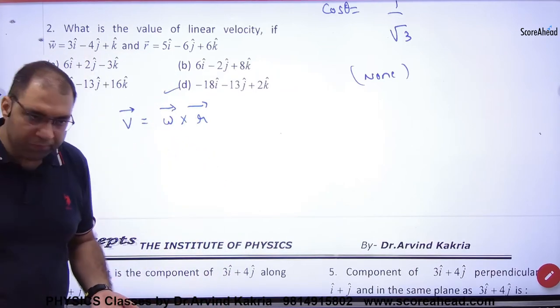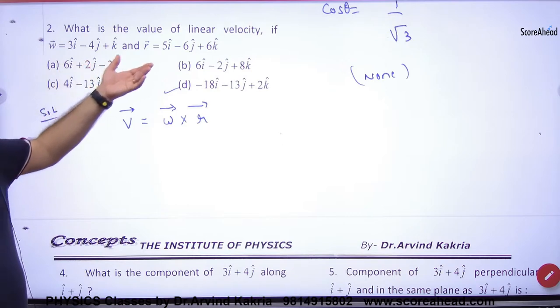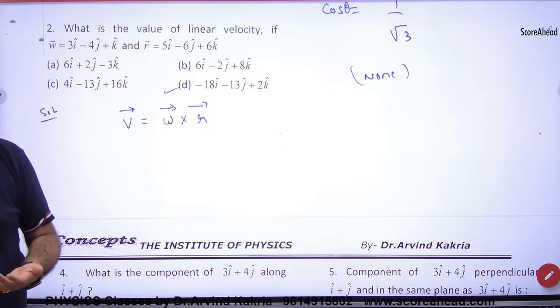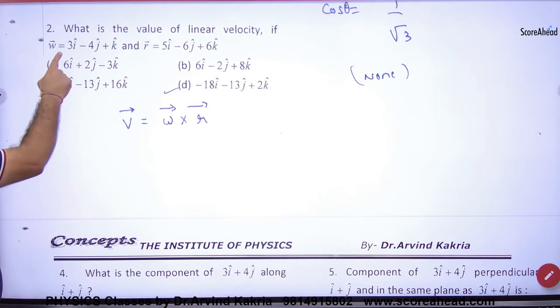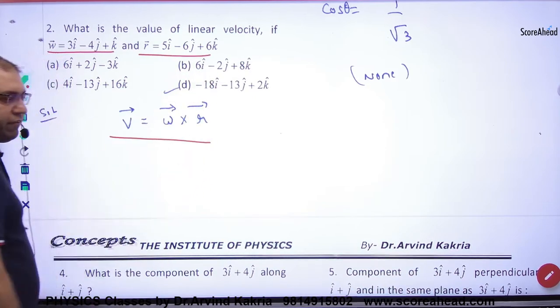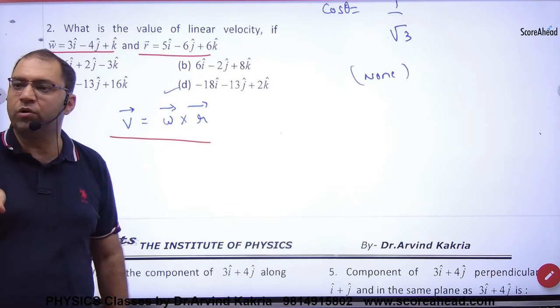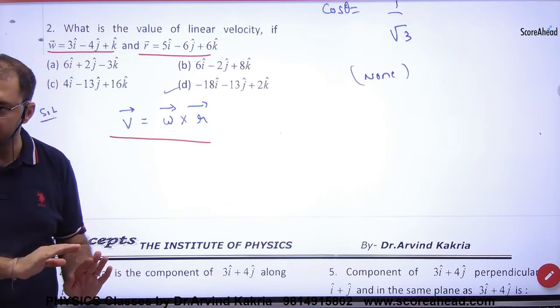In circular motion, if someone asks you about linear velocity, velocity is a vector quantity so we have to look at v vector. What is given? This is omega, omega vector is given and r vector. So we will do a formula in physics: v vector is always equal to omega vector cross r vector.